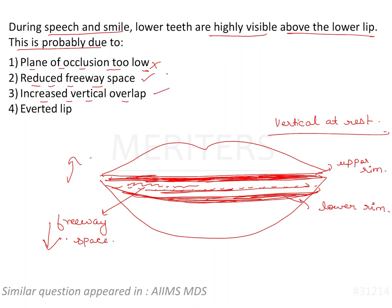Increased vertical overlap — this is at occlusion and not at rest, meaning increased overbite. If you increase the vertical overlap between the anteriors, it is possible that the lower teeth may appear a little more visible. But provided your rim is at the correct level, the teeth have to be arranged at the level of the rim. You cannot surpass the height of the rim, so that is not a possibility — it is at vertical dimension at occlusion.